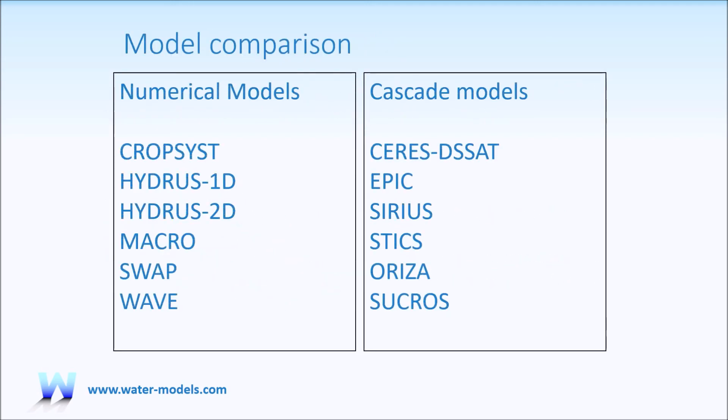This table shows comparison between physically based models using a numerical approach and cascade models. Basically, the agricultural models like CERES and STICS are using the cascade approach, while more hydrologically oriented models consider a numerical approach.